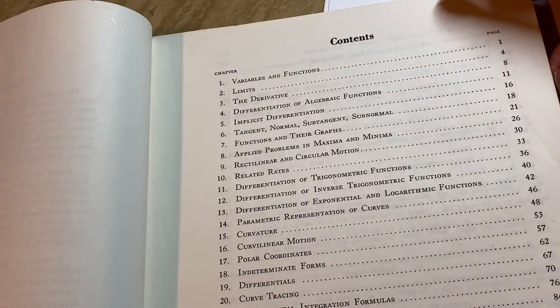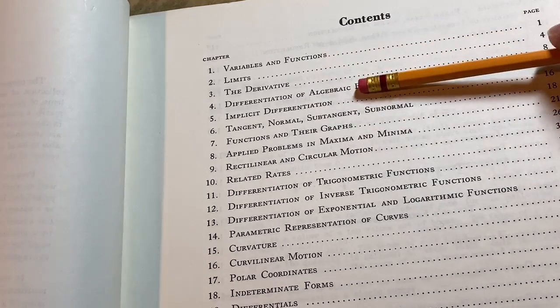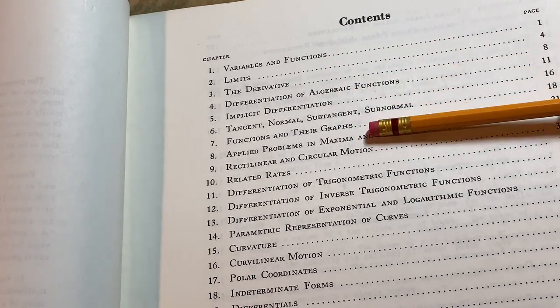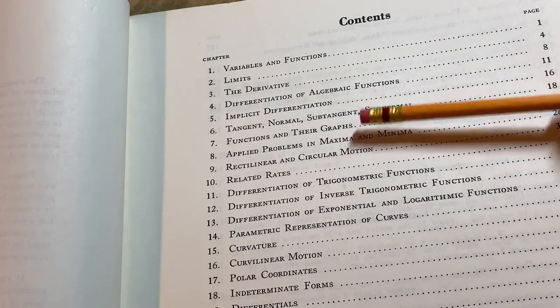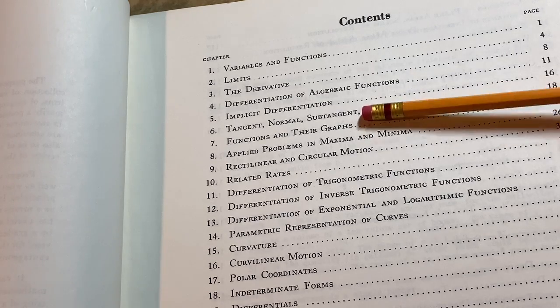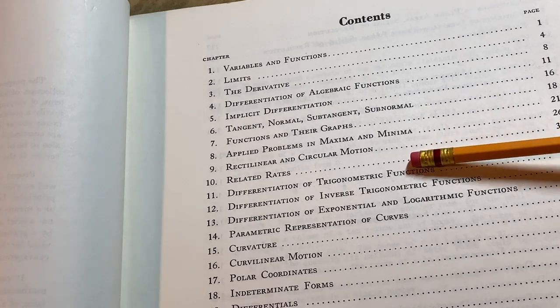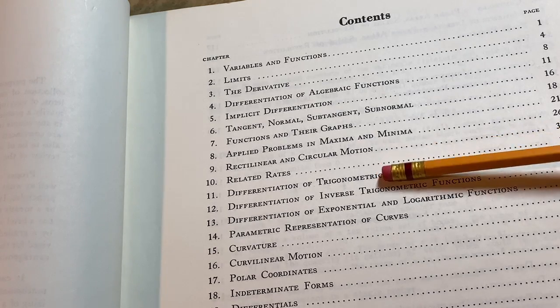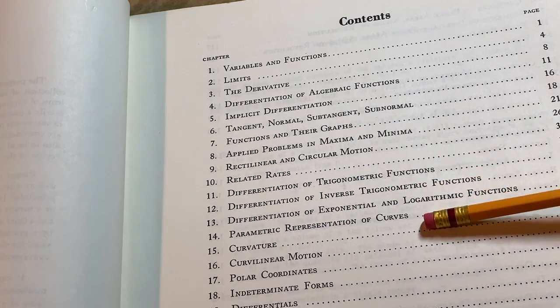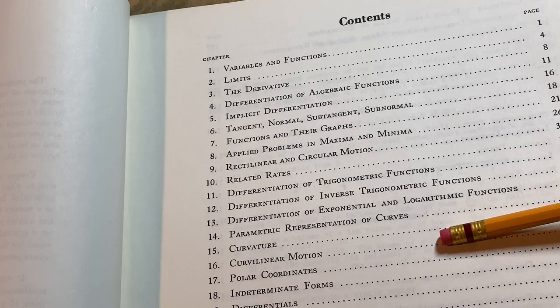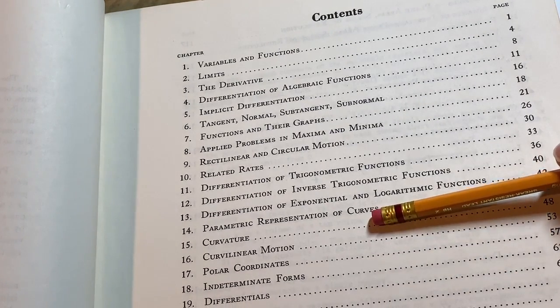It's really clean and nice looking. It starts with variables and functions, then it goes on to limits, the derivative, differentiation of algebraic functions, implicit differentiation. That's a topic that people struggle with a lot. Tangent, normal, subtangent, and subnormal. Those are maybe things that you've never heard of or seen, but it's in this book. Functions and their graphs, applied problems in maximum and minima, rectilinear and circular motion, related rates. That's a common topic taught in Calc 1 today. Differentiation of trigonometric functions, differentiation of inverse trigonometric functions, differentiation of exponential and logarithmic functions, parametric representation of curves, curvature.